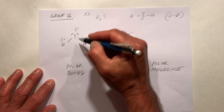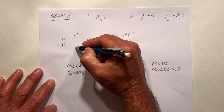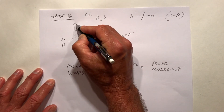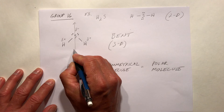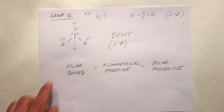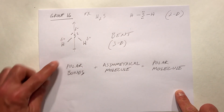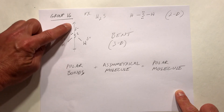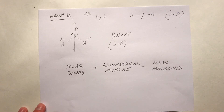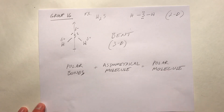We draw our arrow across that molecule pointing to the negative part, with a plus sign on the tail at the positive part. The delta charges indicate bond polarity, and the arrow with the plus sign indicates molecular polarity. So we have polar covalent bonds and a polar covalent molecule because of the asymmetry.